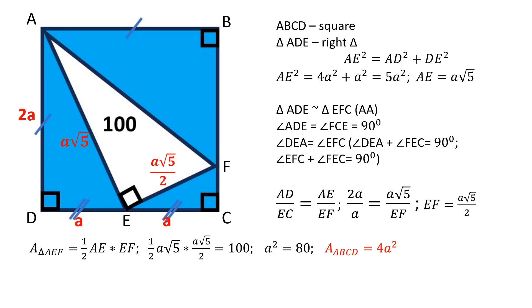The area of the square is equal to 4a squared. The area of the square is equal to 320 square units.